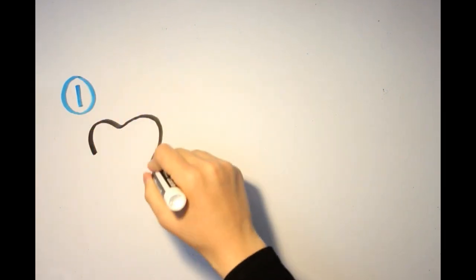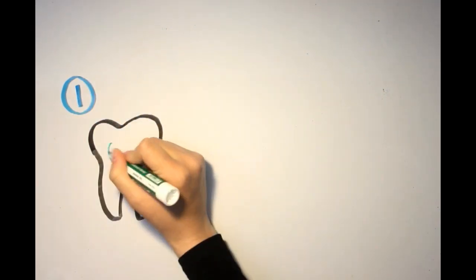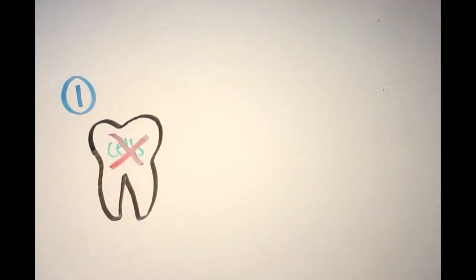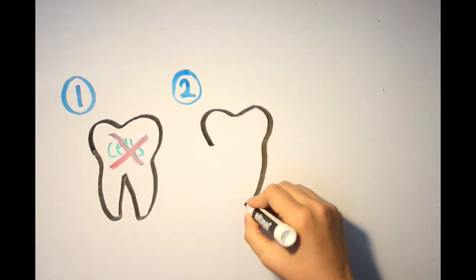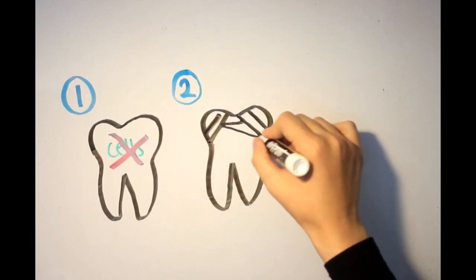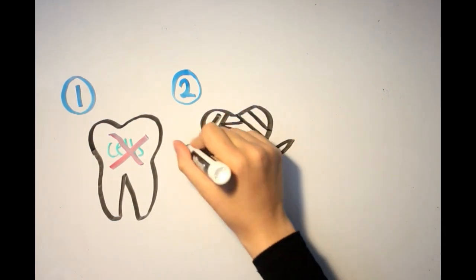Enamel is known for its avascular and acellular structure, meaning it has no blood vessels or cells. Due to that, it can't be replaced if it's damaged and it has no capacity for repair.